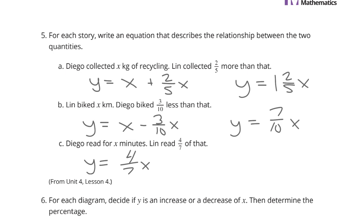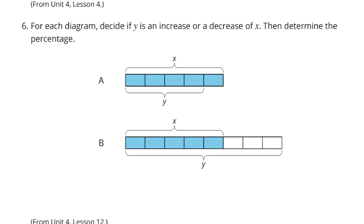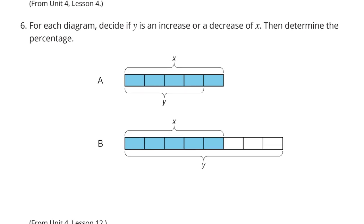For each diagram, decide if y is an increase or a decrease of x, then determine the percentage. Well, x is sitting here at 1, 2, 3, 4, 5, and y is just 4 of those 5. First off, in A, it's going to be a decrease. It's a 1/5 decrease because it goes from 5 to 4. So 1 out of the 5 is getting decreased, which is equal to 20%.